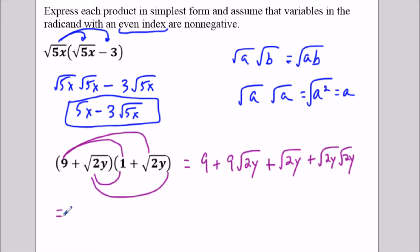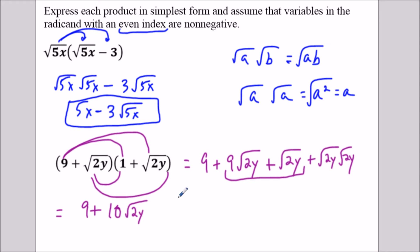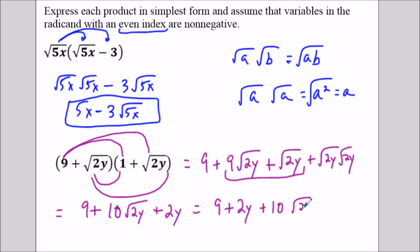To simplify this, we've got 9 plus — these are like terms we could combine — 9 radical 2y plus radical 2y. There's an invisible 1 in front here, so we add the coefficients and that's going to be 10 square root of 2y. And then square root of 2y times square root of 2y is 2y. We could technically leave it in this form, but I prefer to write the non-radical terms first. So you can say 9 plus 2y plus 10 square root of 2y. This is as simple as it gets.